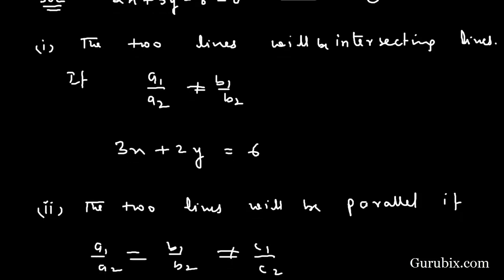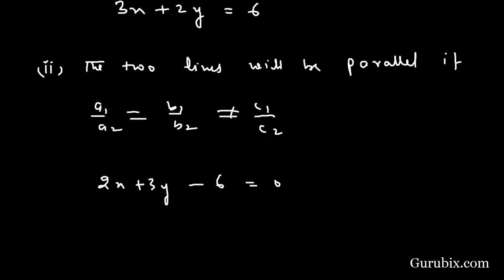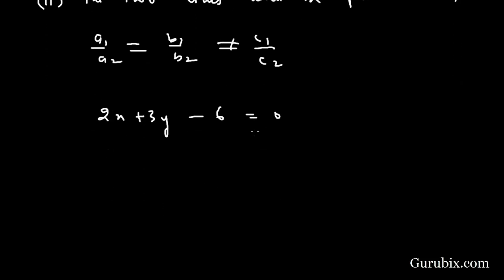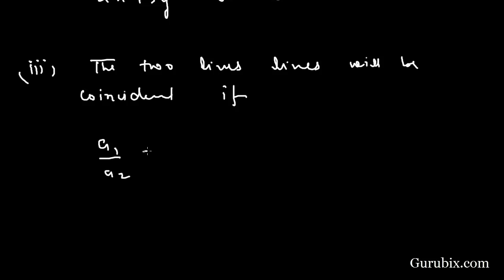For case 3, the two lines will be coincident if a1 over a2 equals b1 over b2 equals c1 over c2. Then it would be 4x plus 6y minus 16 equals 0.